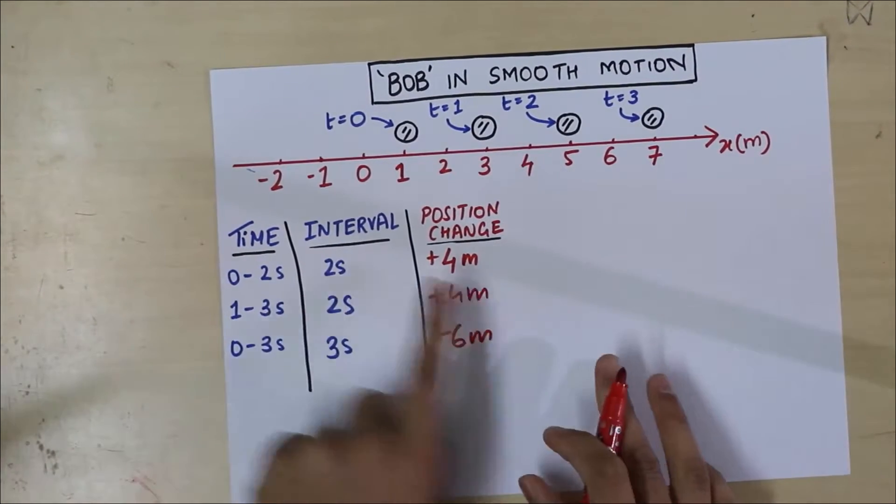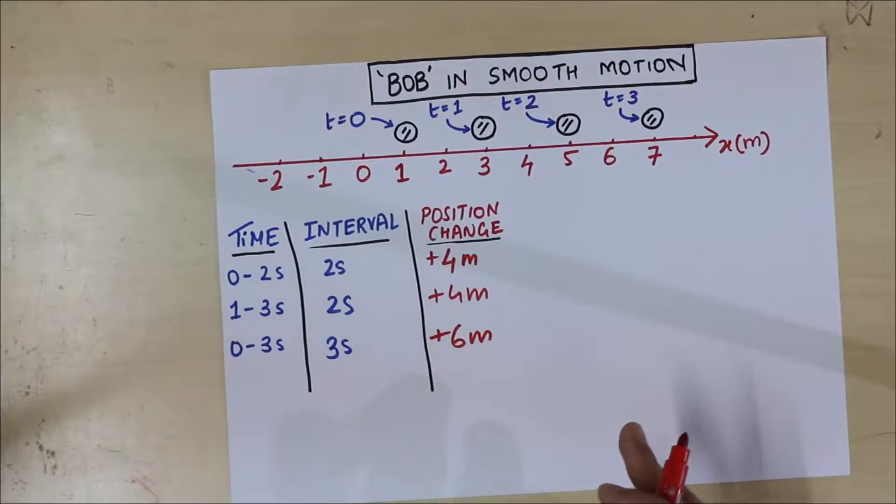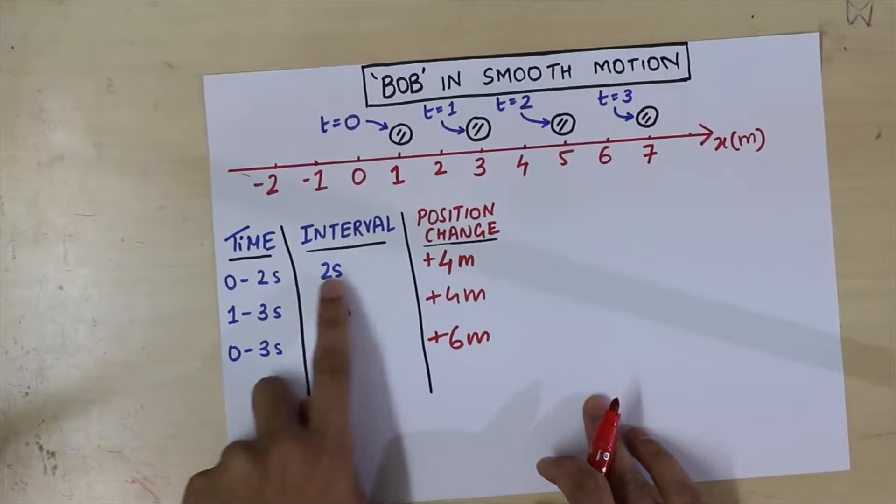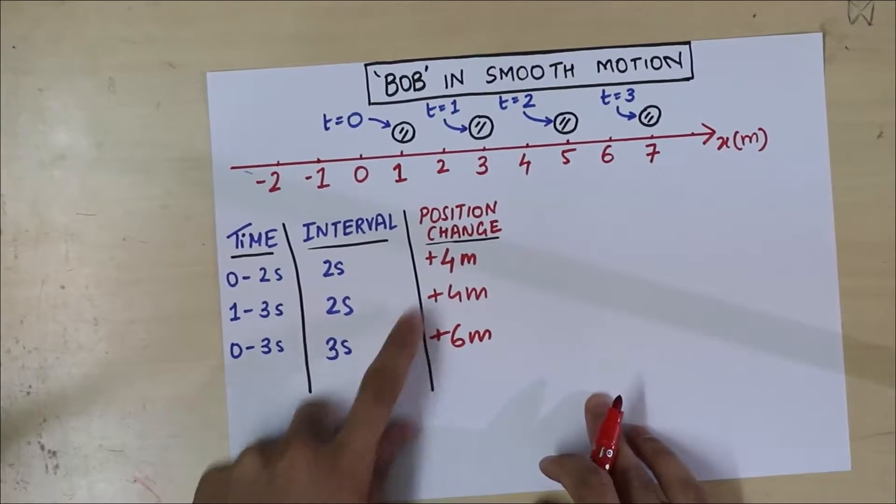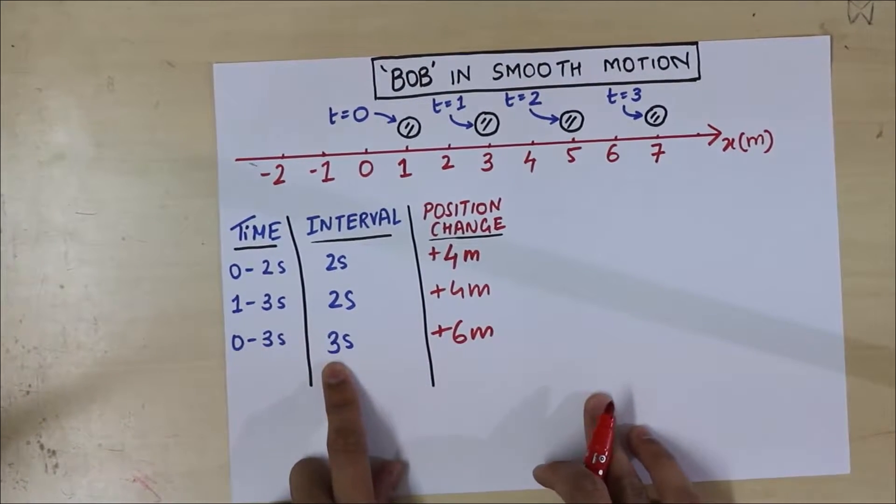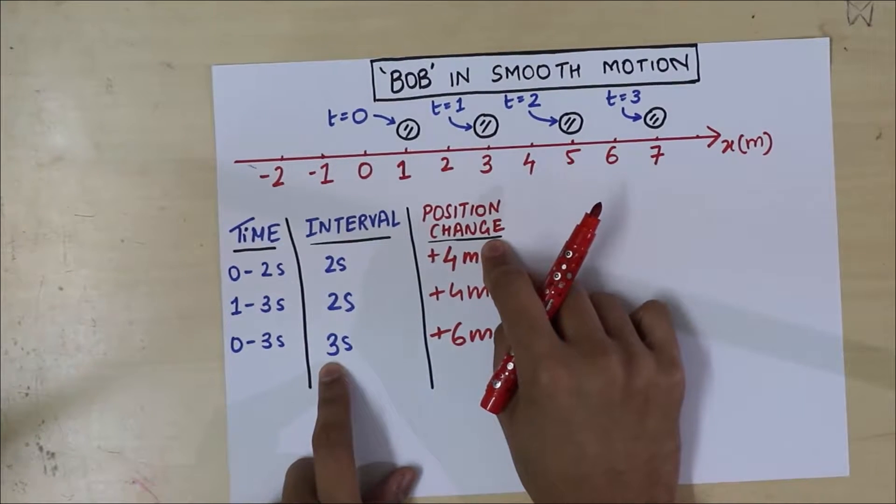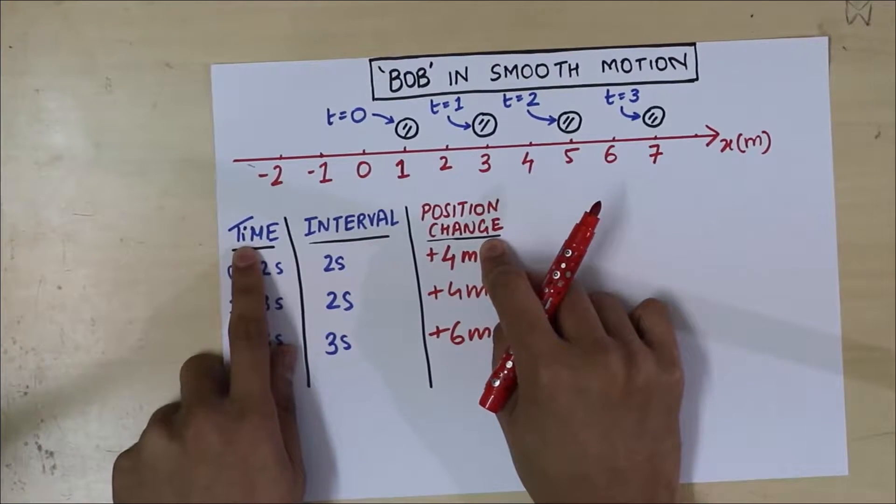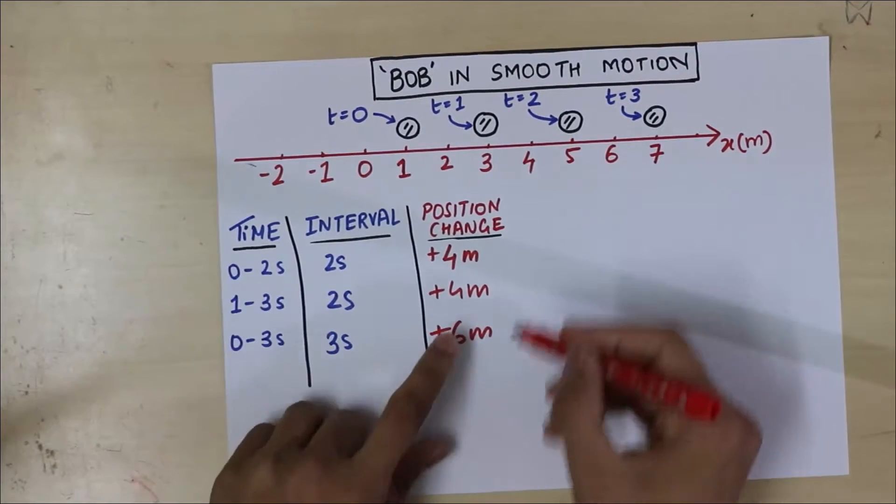Do you see some sort of a trend here? There is something going on. Well, if you don't notice it, just divide the 2. You can see 4 by 2 is 2. If you divide the 2, you get 2. You get a 2 here. 6 by 3 is also 2. So what you're seeing is that the position change per time interval, that is a constant. Let me write that down.